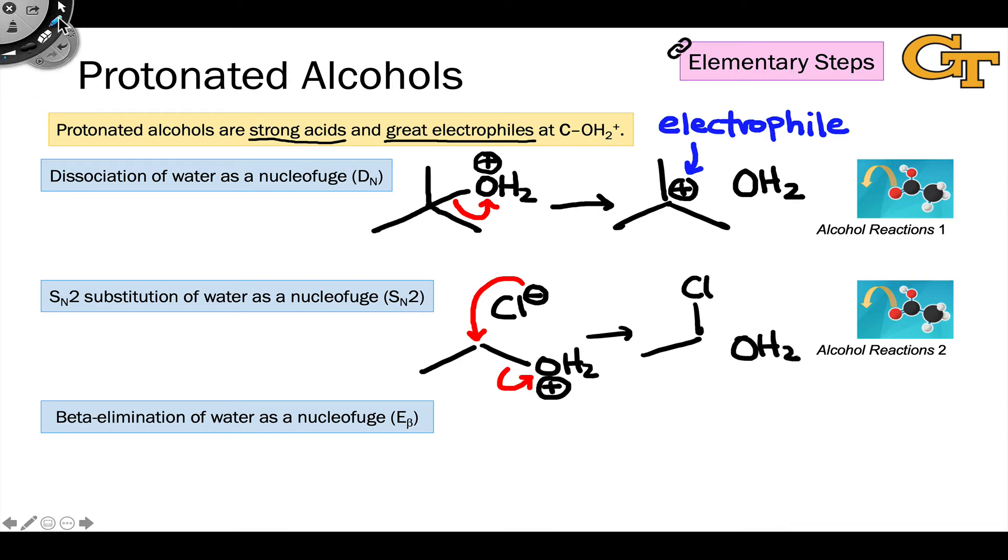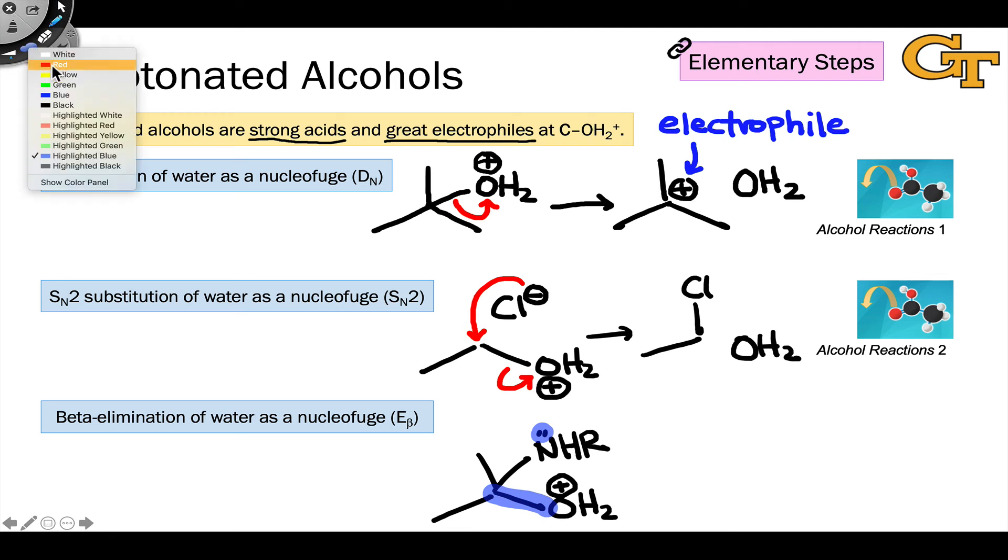Finally, the beta elimination of water as a nucleofuge can occur in protonated alcohol type structures where there's another heteroatom linked to the carbon bearing the protonated hydroxyl group. For example, here we've got a nitrogen with a nicely nucleophilic lone pair positioned beta to the positively charged oxygen atom and adjacent to this polarized carbon-oxygen bond, heavily polarized toward the oxygen. So we've got the ingredients for beta elimination here.